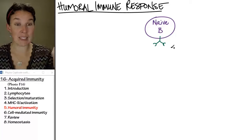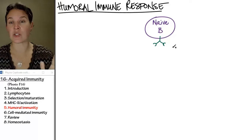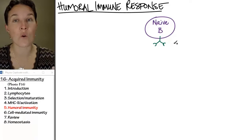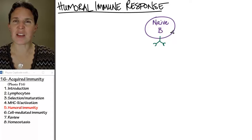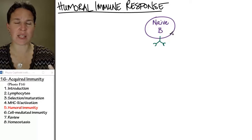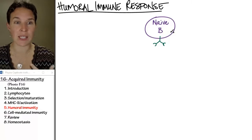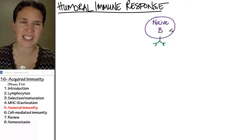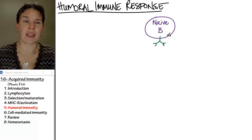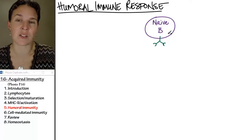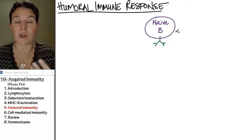The naive B cell passes all of its school, heads out to the world, and patrols the body. A naive cell is going to hang out in the lymph nodes — that's like the lymphocyte donut store where they all hang out and talk to each other and see who's coming by. They kind of monitor what's going on.